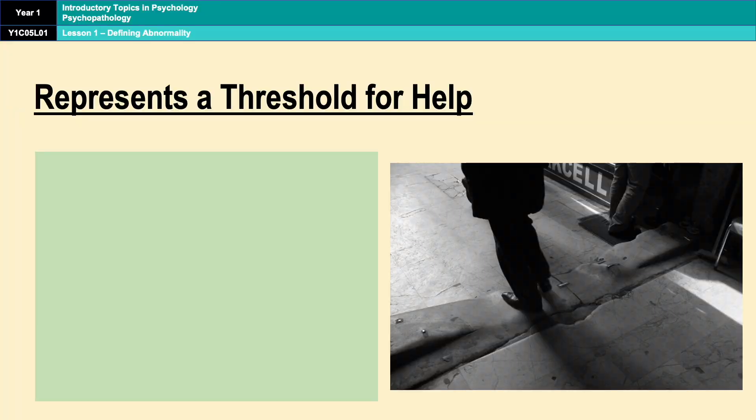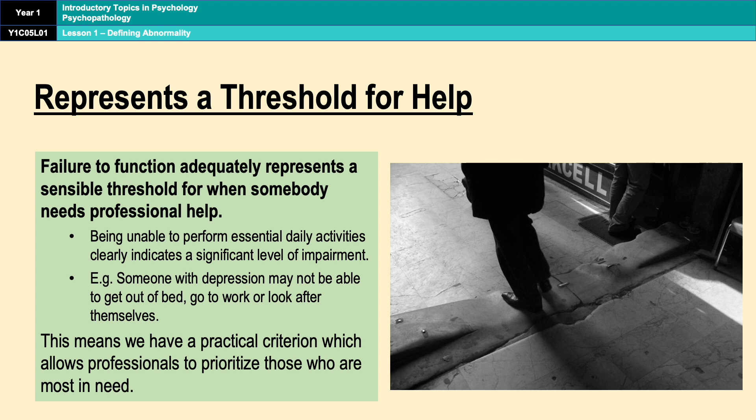A key strength of this definition is that it provides a sensible threshold for determining when an individual needs help. When they are unable to perform essential daily activities and fulfil basic responsibilities, it clearly indicates a significant level of distress or impairment and signals the need for professional intervention. This means we have a practical criterion which ensures that help is provided when an individual's ability to live a normal life is compromised, allowing professionals to prioritise those most in need.